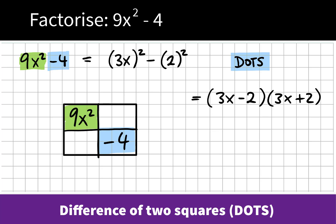The square root of 9x squared, in other words the two factors that are the same size, will be 3x by 3x. These are the factors of 9x squared. The factors of negative 4 that are the same size are negative 2 by positive 2.